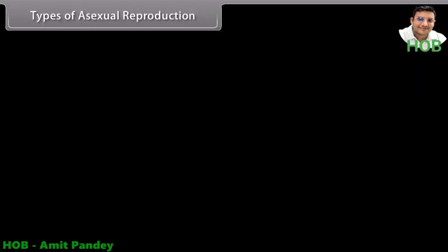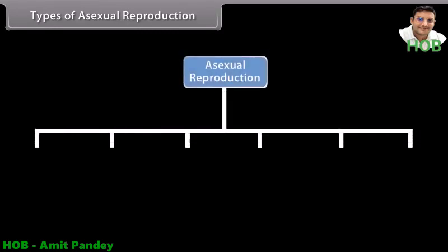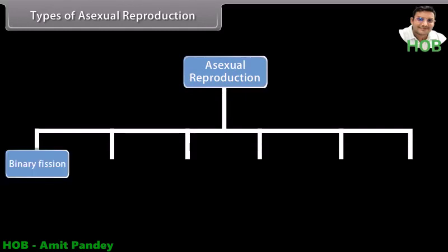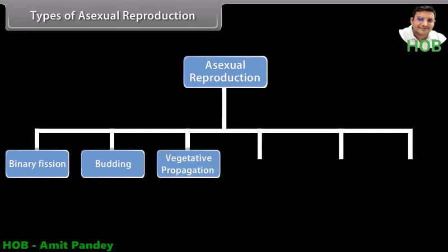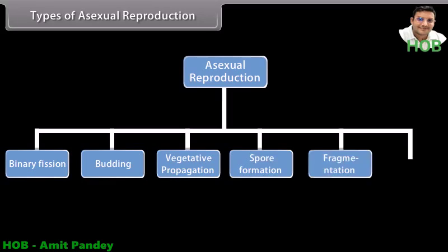Types of asexual reproduction. Do you know how organisms reproduce asexually? An organism may reproduce asexually by binary fission, vegetative propagation, spore formation, fragmentation, and parthenogenesis.